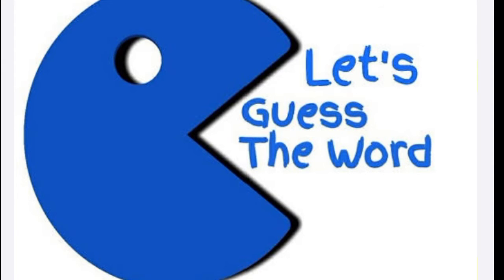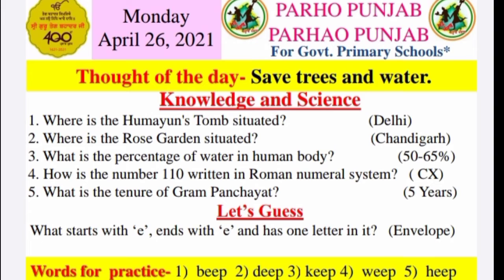Now it's time — let's guess. What starts with E, ends with E, and has one letter in it? It is an envelope. The first letter is E and the last letter is also E, and we put a letter inside an envelope. Yaani ki lifafa — lifafa di vich ki hunda hai? Letter.